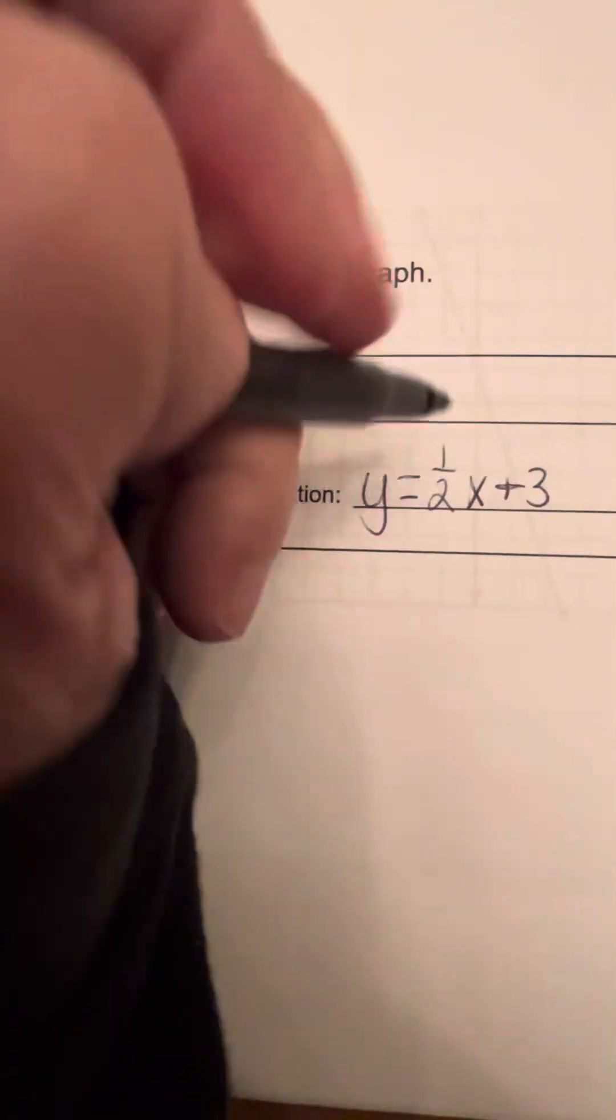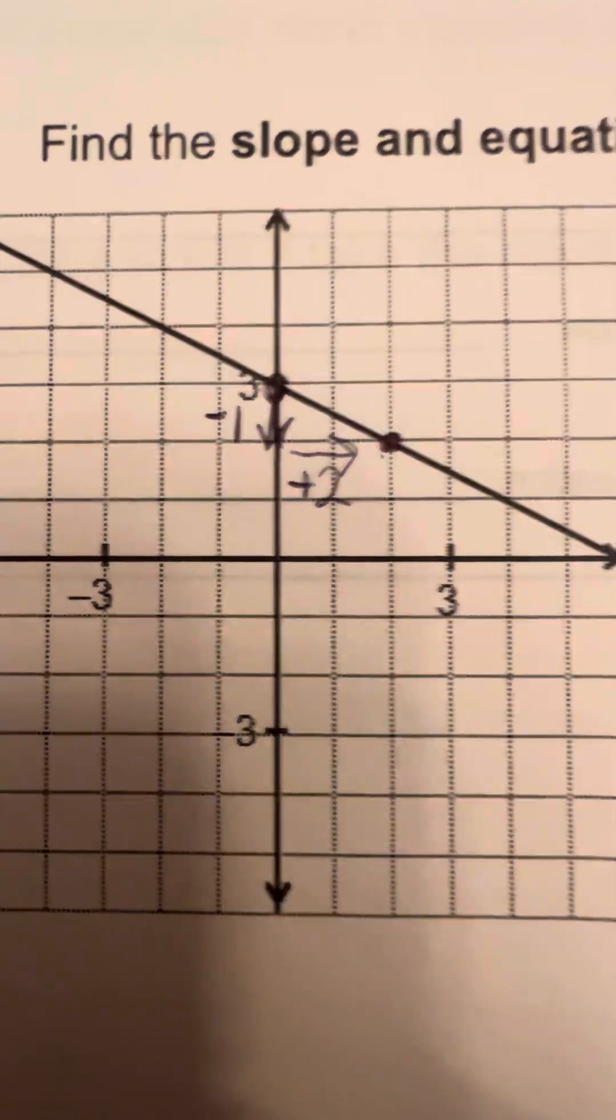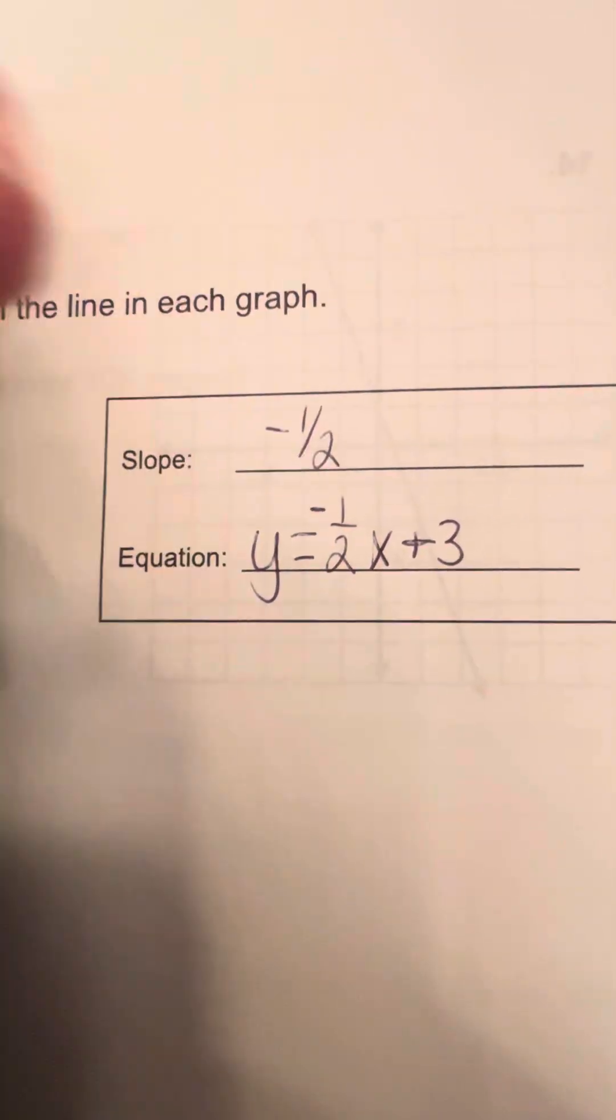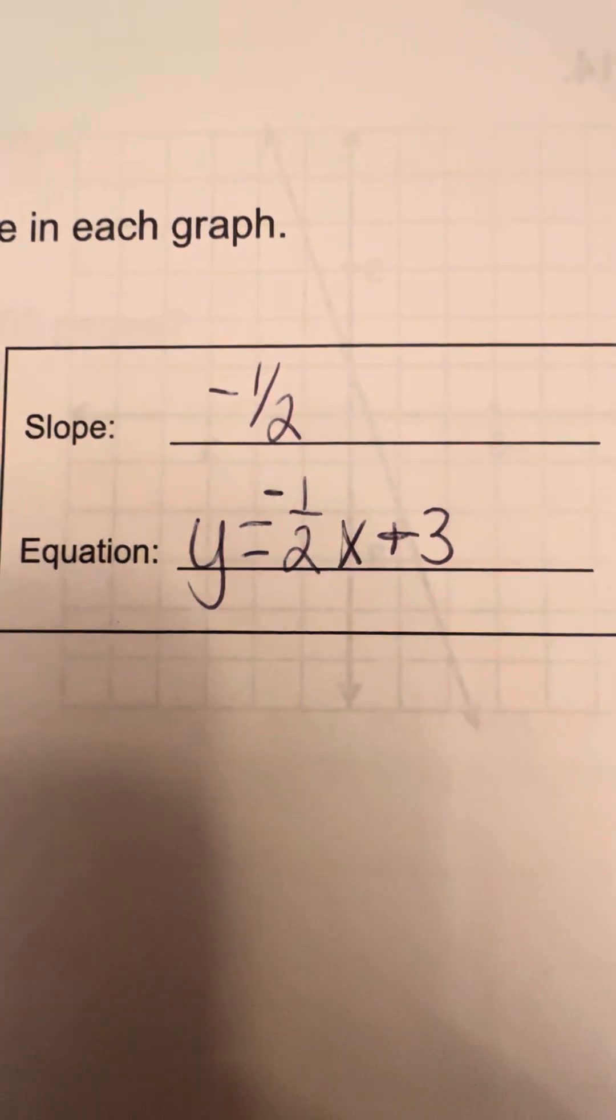And it is a negative 1, because it is going down 1 right there. And so that slope, again, is negative 1 half. And then our equation is y equals negative 1 half x plus 3.